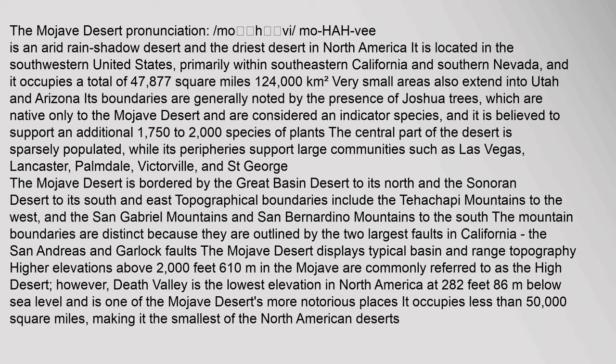The Mojave Desert — pronunciation Mo-Ha-V — is an arid rain shadow desert and the driest desert in North America. It is located in the southwestern United States, primarily within southeastern California and southern Nevada, and it occupies a total of 47,877 square miles (124,000 square kilometers). Very small areas also extend into Utah and Arizona.